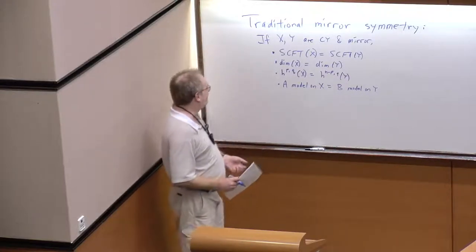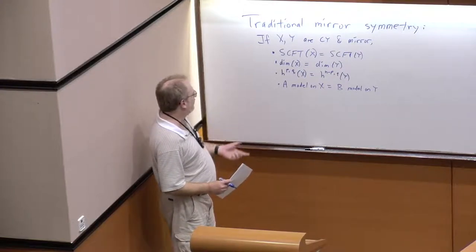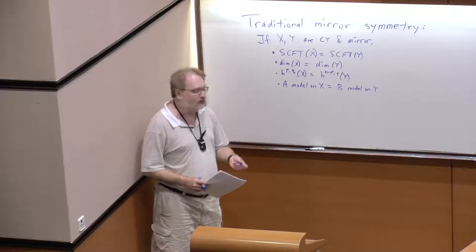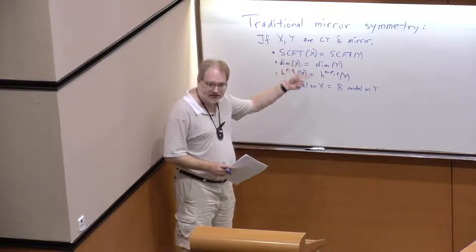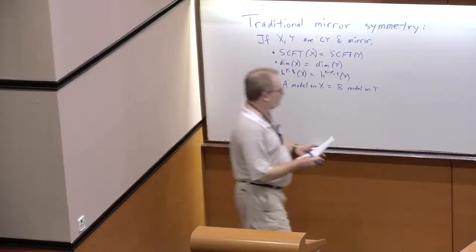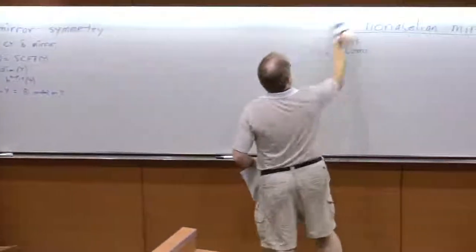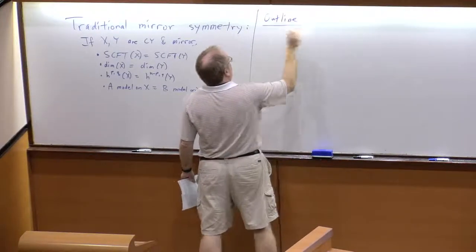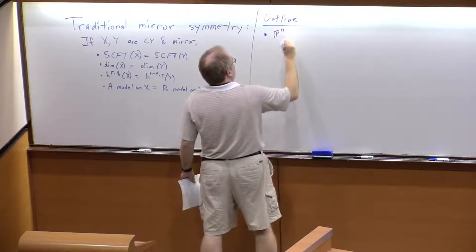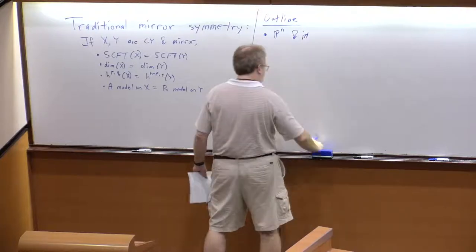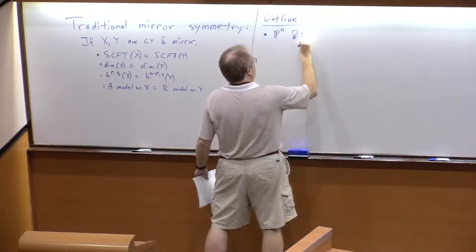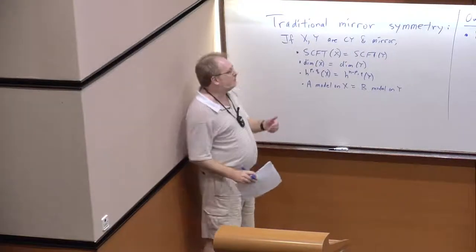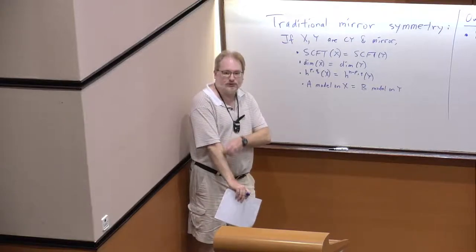What I really want to talk about today is a slight variation worked out by Hori and Vafa, which is really a notion of mirror symmetry for gauge theories. In coming up with a notion of mirror symmetry for gauge theories, that also enables one to make sense of mirror symmetry for spaces that are not Calabi-Yau. Let me take a minute to explain how in the world that works, and give an outline of what I want to do.